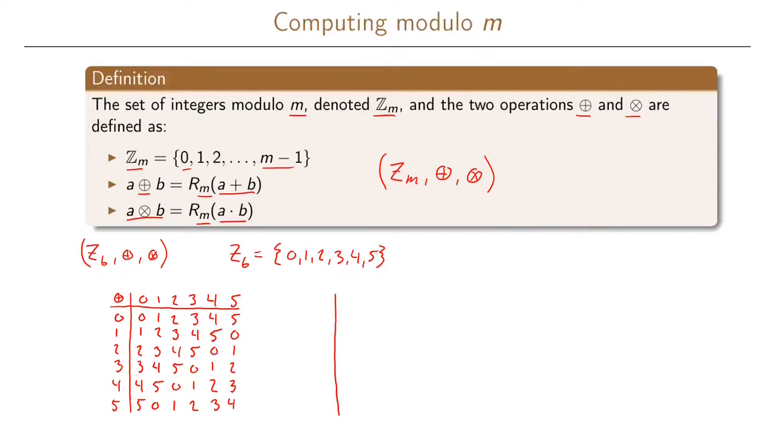Let us do the same thing for the multiplication table. So here we have multiplication modulo 6. Again we have 0, 1, 2, 3, 4, and 5. And now we have multiplication instead. When you multiply by 0 we will always get 0. So these can be trivially filled out. When you multiply by 1 you will get the same number back. So these can also be trivially filled out.